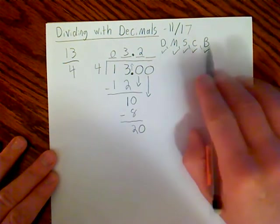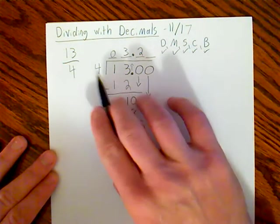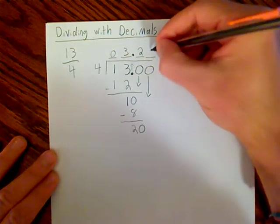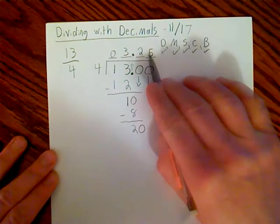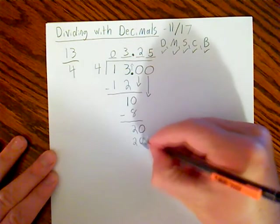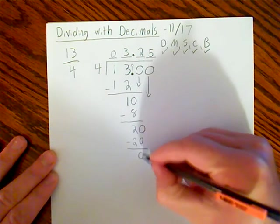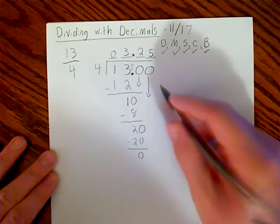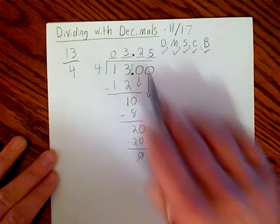And I think we're going to get one here soon. So we brought the number down, we start the process over again. 4 goes into 20 five times. 5 times 4 is 20. Subtract. 0. Nothing, no remainder, nothing to bring down. Now we are done.